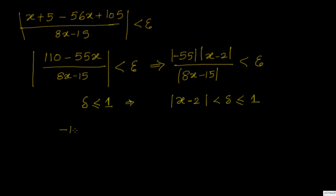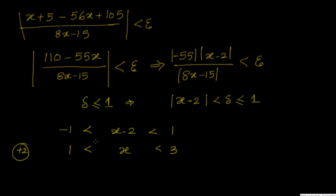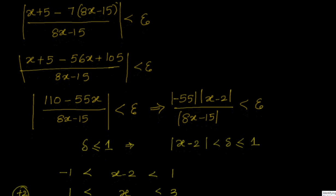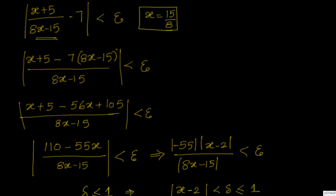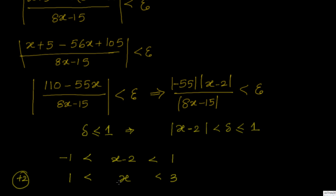So this means -1 < x - 2 < 1. If we add 2, that gives us 1 < x < 3. But we have a problem: this function is not defined at x = 15/8 = 1.875. So I cannot have values of x in this particular range, and you can see that 1.875 is almost equal to 2, which falls in this interval. So delta ≤ 1 is not helping us.